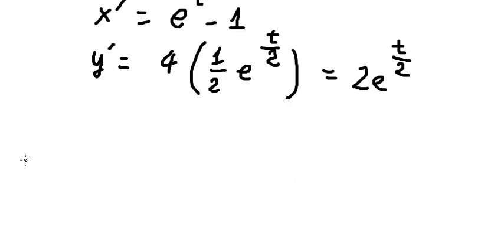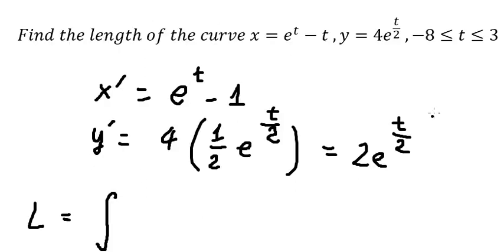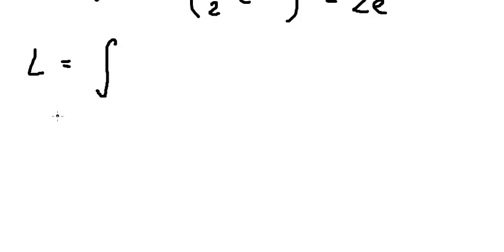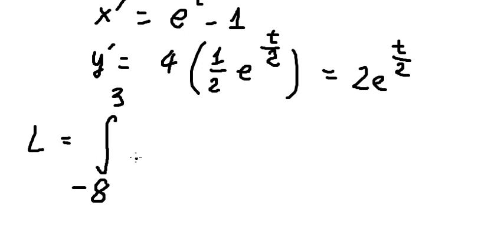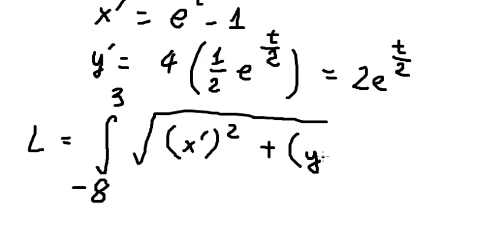Next, we can apply the formula. We have the integral from negative 8 to positive 3. We have the square root, and we put the derivative of x to the power of 2 and the derivative of y to the power of 2, and we put dt in here.